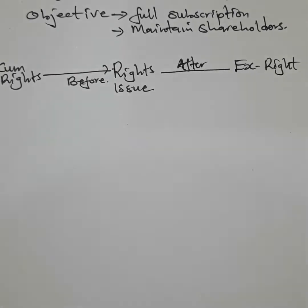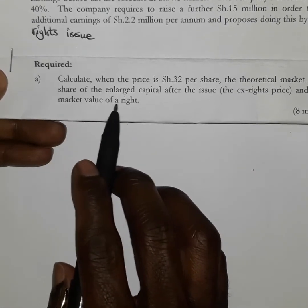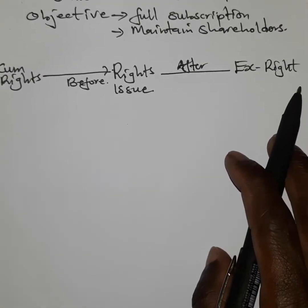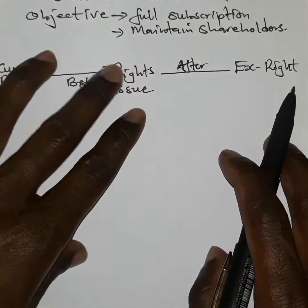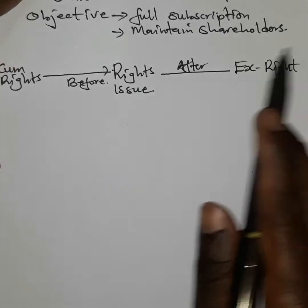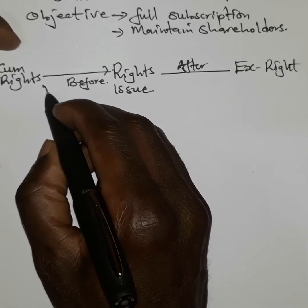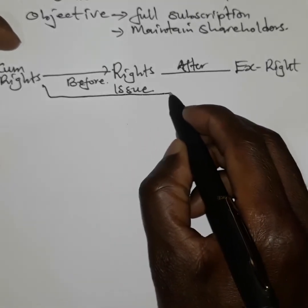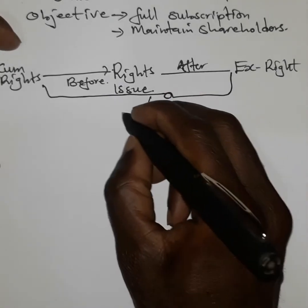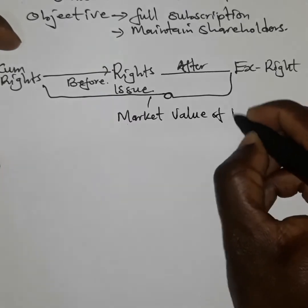We are also required to determine the market value of a right — that is, what is the value of a right that any particular shareholder was exercising in this shareholding capacity. In other words, we are going to get the difference between cum rights and ex-rights. That difference will give us what is known as the market value of rights.